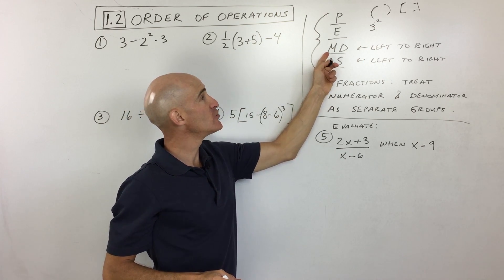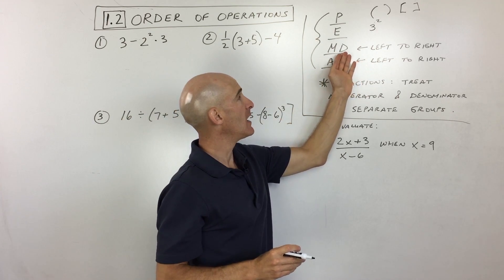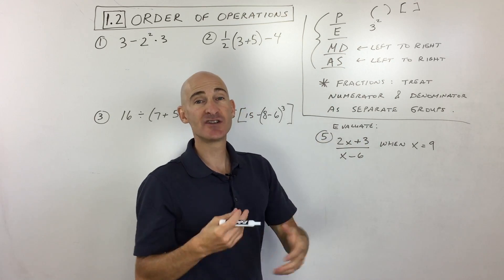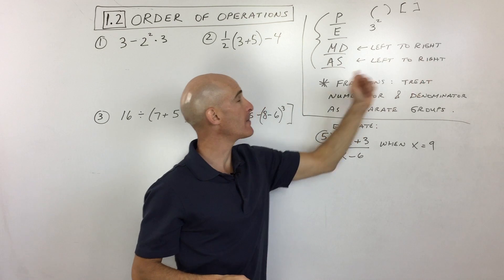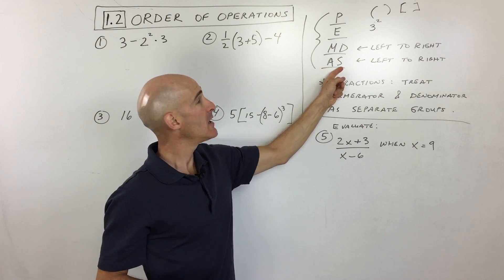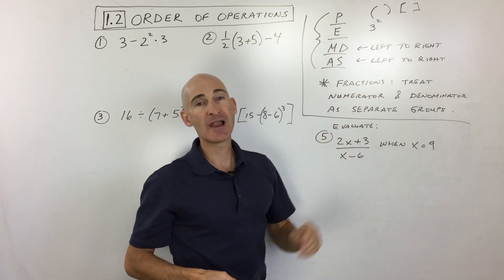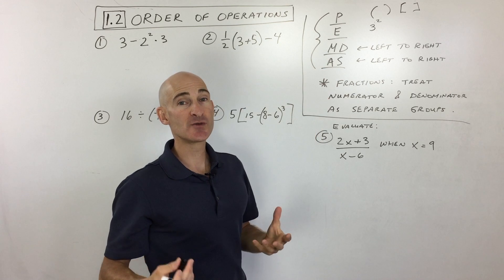Then third, you do multiplying and dividing. Those are on the same level. If you have multiple multiplications and divisions, work your way from left to right, just like you read. And lastly, addition and subtraction. Again, work from left to right. So think of those four levels and we're going to go through some examples together.